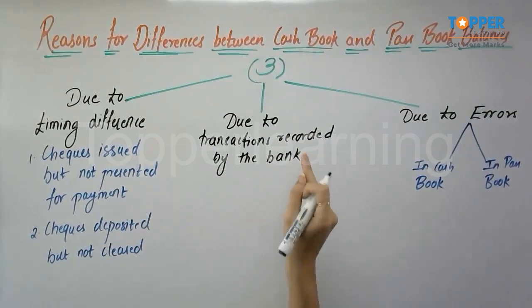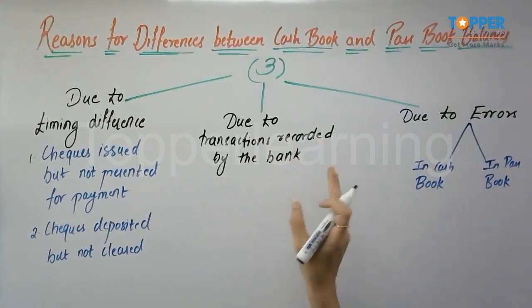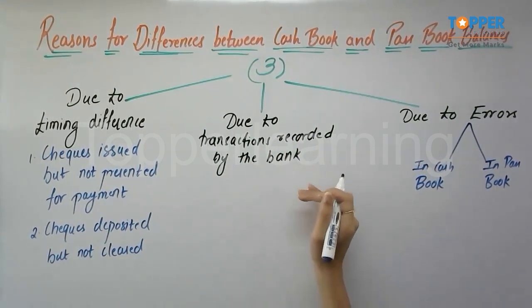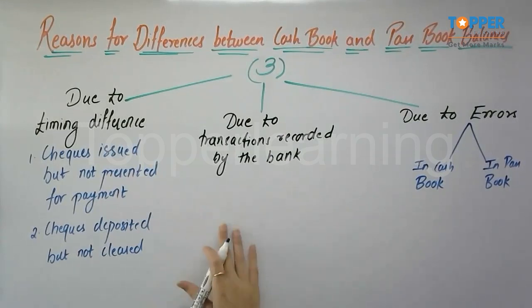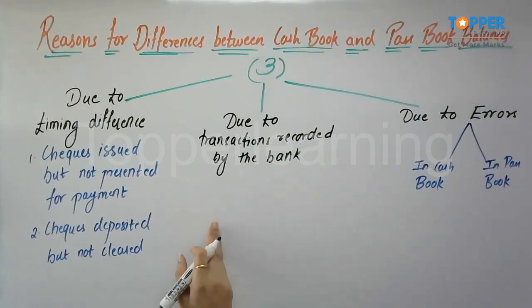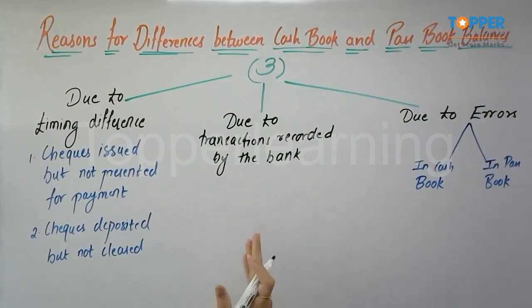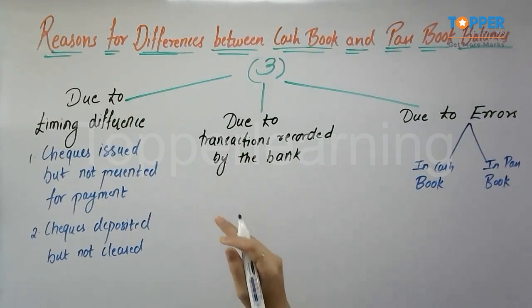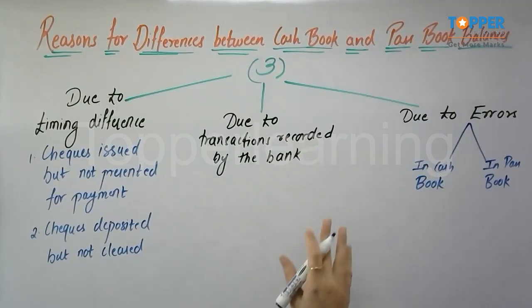Moving ahead, we have the reasons under transactions recorded by the bank. There are transactions which are recorded by the bank but not recorded in the cash book. For example, if standing instructions are given to the bank for making payments, the payment is made directly by the bank and recorded in the passbook but not in the cash book. Similarly, bank charges or bank interest are determined by the bank itself, recorded by the bank on its own, and will not be seen in the cash book, causing a difference.